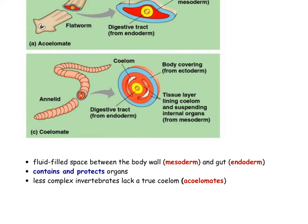The coelom is that fluid-filled space between the body wall — the mesoderm — and the gut, or endoderm. Its purpose is that we tend to see a coelom present in organisms that are a little bit more complex, and its role is to contain and protect any organs or organ systems. So the less complex invertebrates, like the flatworm, are not going to have a coelom, and they're referred to as acoelomates.